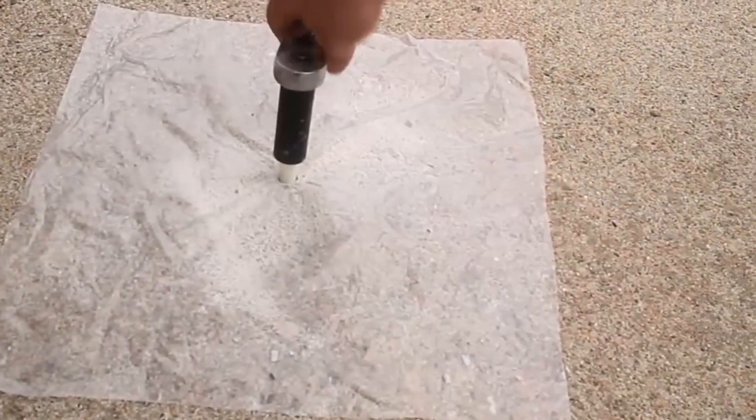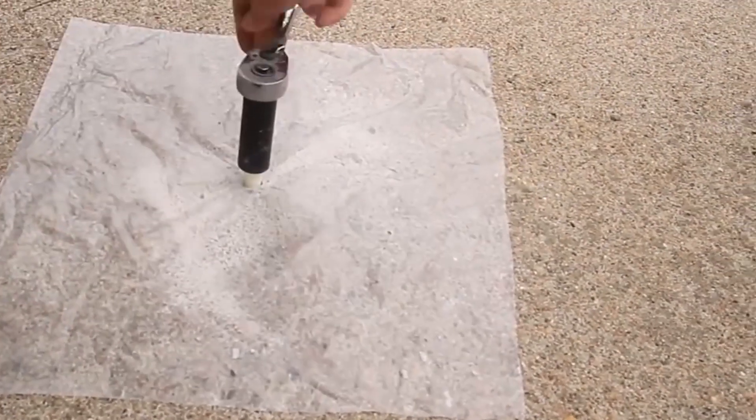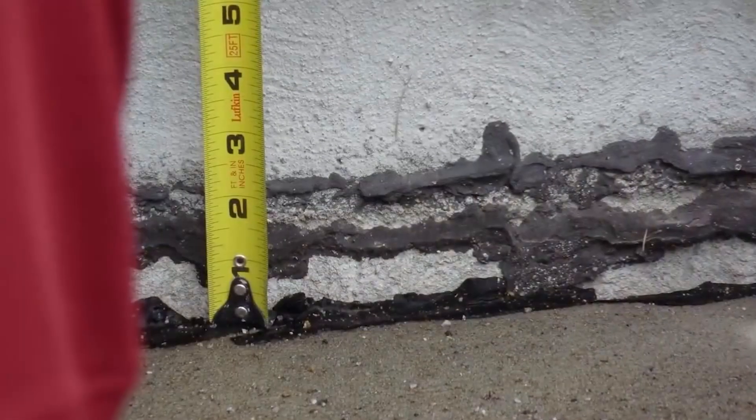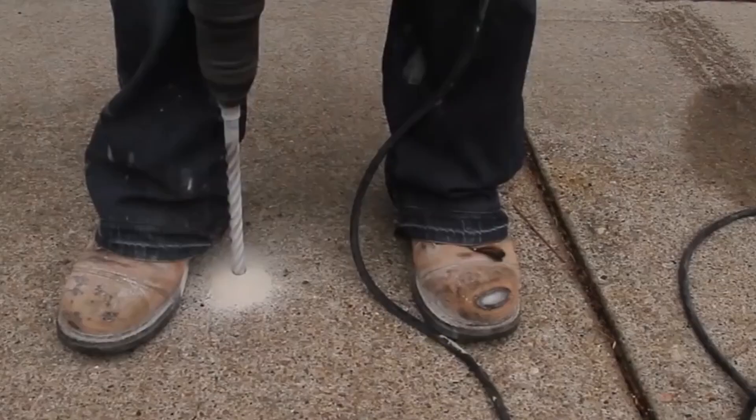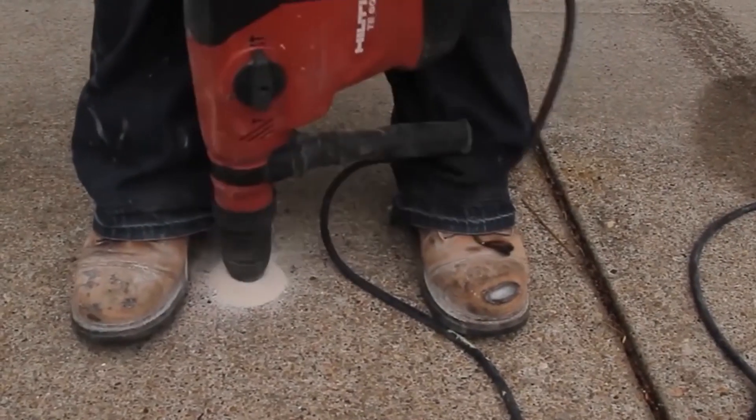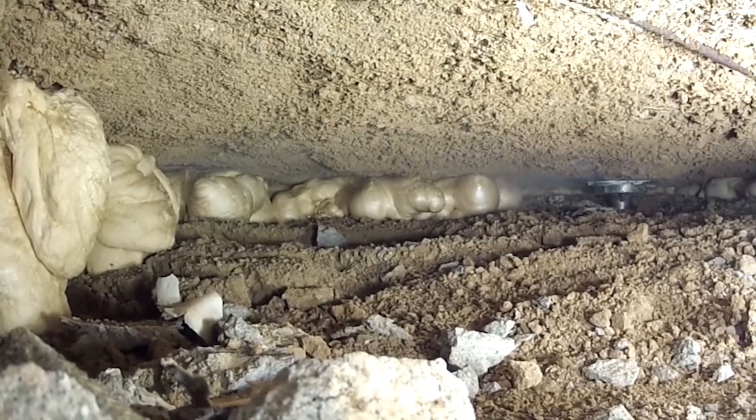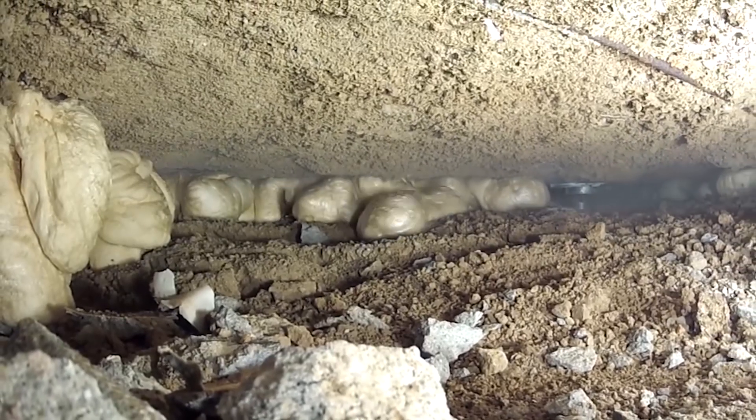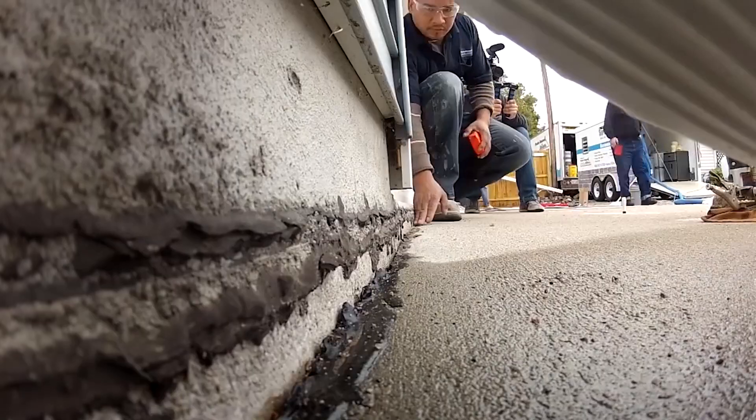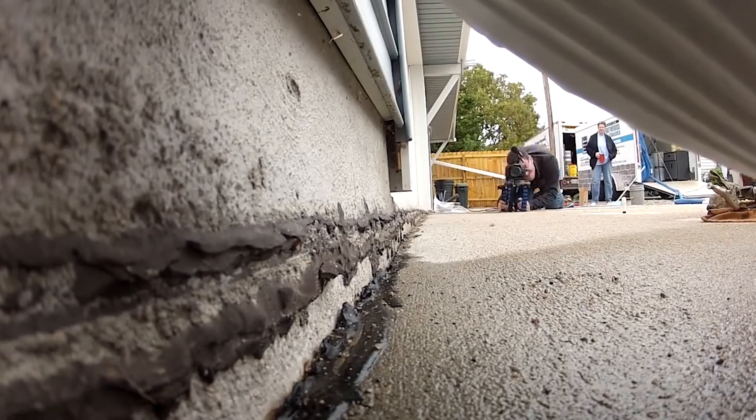The Polylevel process involves drilling small holes in the sunken concrete slab and injecting the polyurethane foam into the voids beneath it. The foam then expands and hardens, lifting the concrete slab back to its original position. Once the foam is hardened, the holes are patched, and the slab is ready for use.